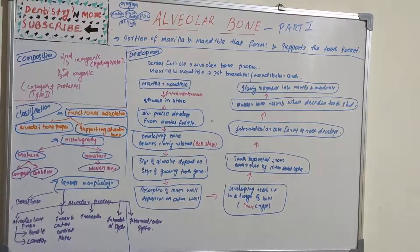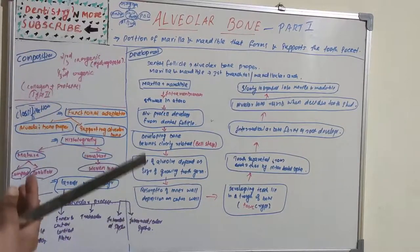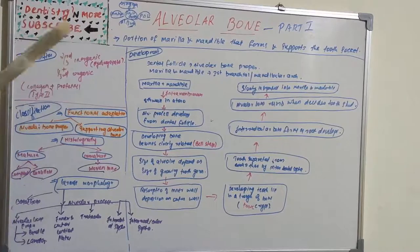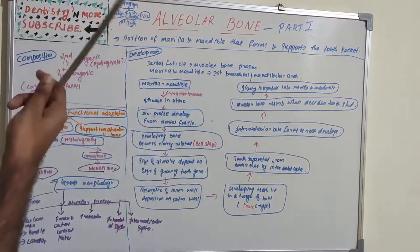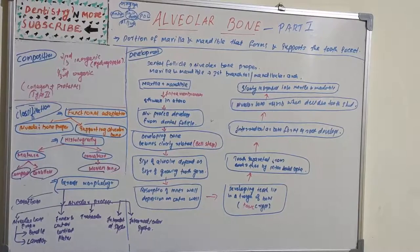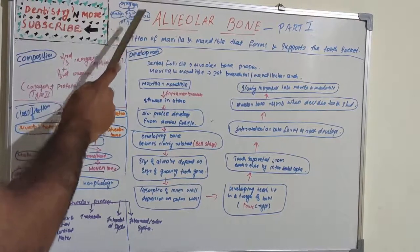In deciduous teeth, when a deciduous tooth sheds, its alveolar bone automatically resorbs. After that, the alveolar process gradually gets incorporated into the maxillary or mandibular body, though it has a separate origin — finally becoming a single bone. The permanent tooth moves into place, developing its own alveolar bone from its own follicle. The dental follicle gives rise to periodontal ligament, cementum, and alveolar bone.